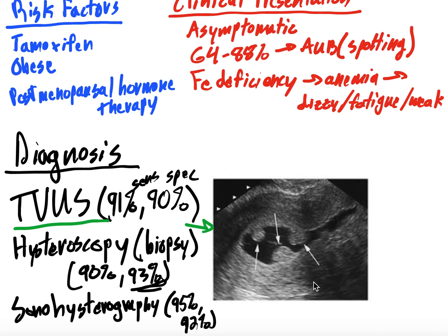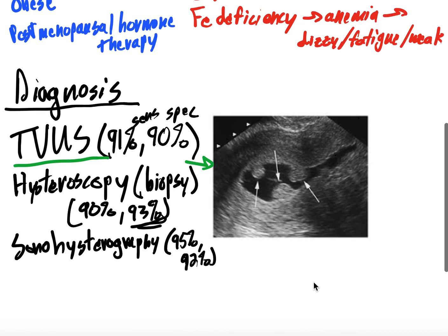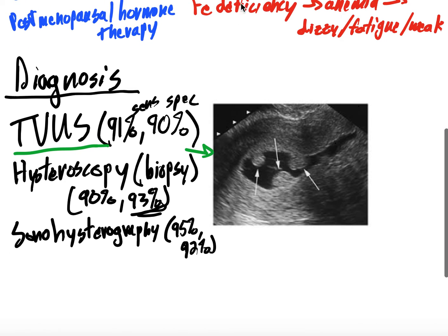Sometimes polyps can actually prolapse through the cervix. So if you're doing a speculum exam, you'll see the cervical canal and you might actually see a polyp coming out of it — that can be a prolapsed endometrial polyp that you can see on speculum exam.